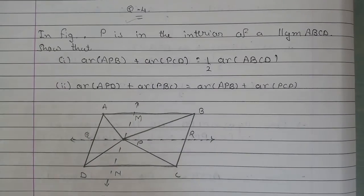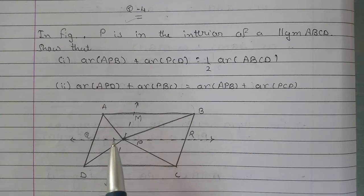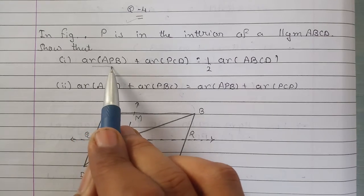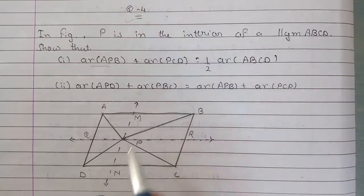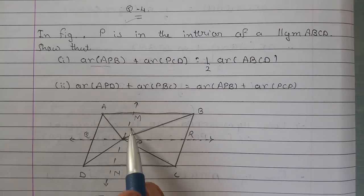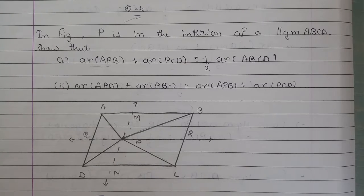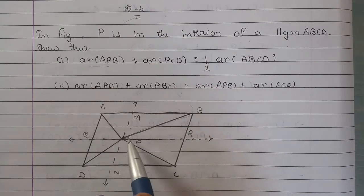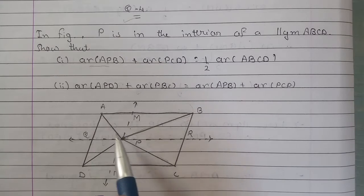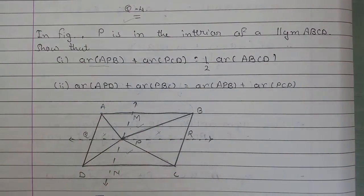We have a parallelogram ABCD, jiske interior mein point P hai. Hamei proof karna hai ki area of triangle APB plus area of triangle PDC, yani in dono triangles ka area, poore parallelogram ke area se half hai. Aur area of triangle APD plus area of triangle PBC is equal to area of triangle APB plus area of triangle PCD — dusre part mein ye prove karna hai.